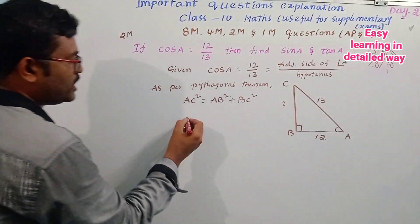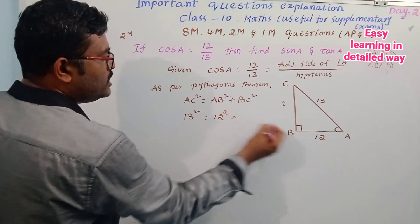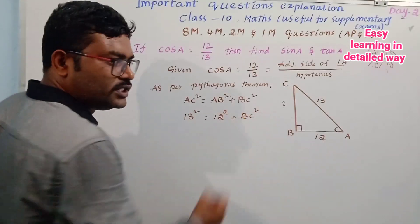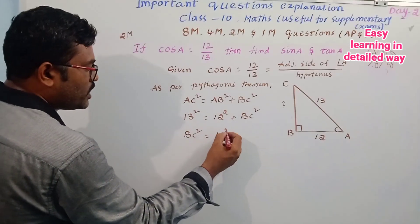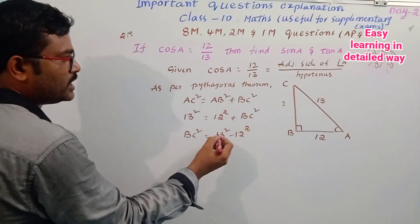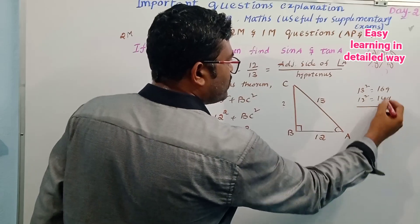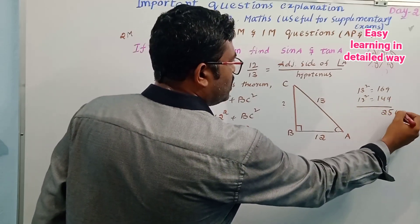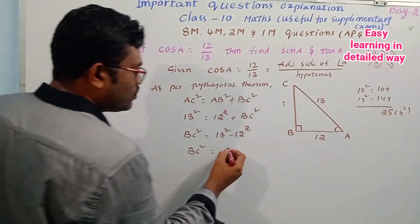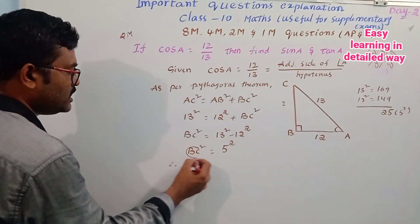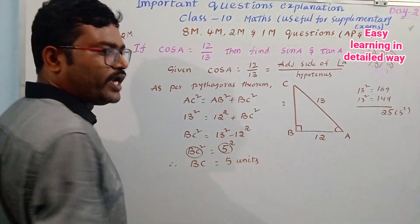Substituting: AC length is 13, so 13 square equals AB length 12 squared plus BC square. Now take out BC square as subject: BC square equals 13 square minus 12 square equals 169 minus 144 equals 25, which is 5 square. So therefore BC is equal to 5 units.